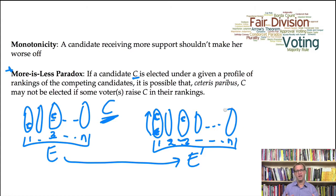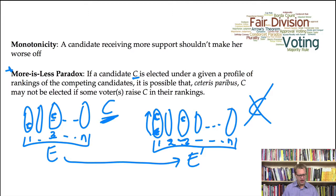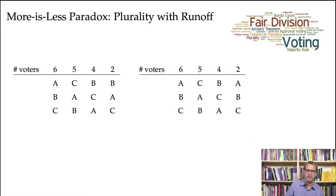The paradox arises when candidate C ends up losing this election, which certainly seems counterintuitive. Because some voters decided C should move up in their rankings, so C seems to be doing better. But when we actually run the election, C loses. So let's look at an example to illustrate this.